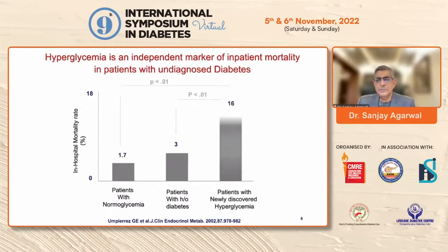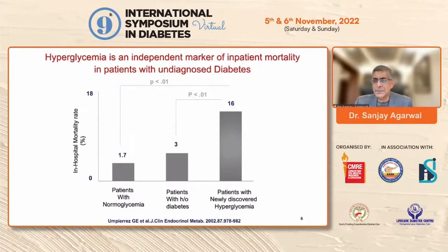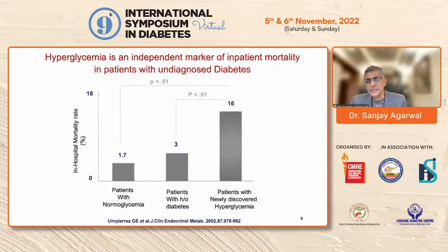In the same paper, in-hospital mortality in patients with normal glycemia was 1.7%, in those with known diabetes it was 3%, but in patients with newly diagnosed hyperglycemia the mortality rate was almost five times as high. New-onset hyperglycemia during hospitalization always reflects a very sick patient experiencing stress hyperglycemia, so mortality rates are higher than in patients with a prior history of diabetes.